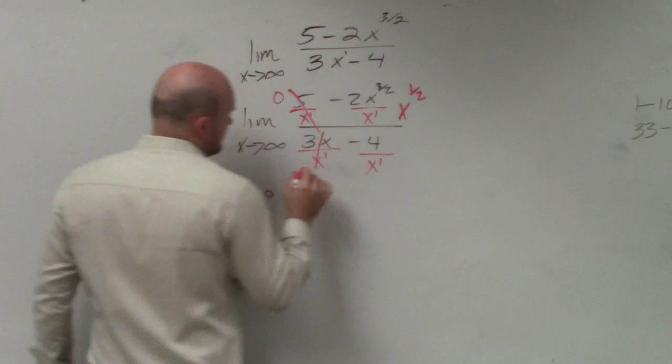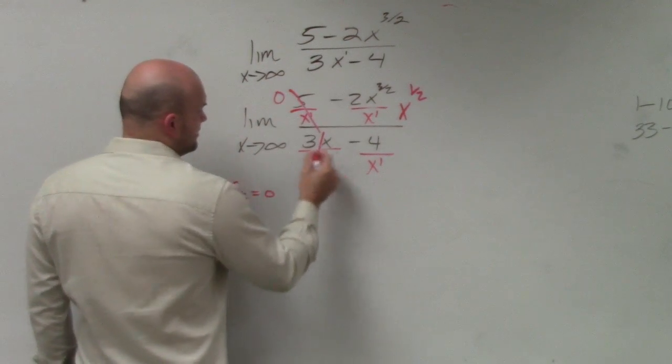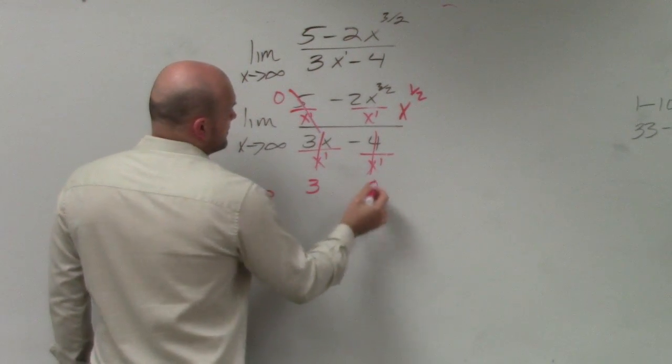Over here, we're left with 3. And then over here, we're left with 0.